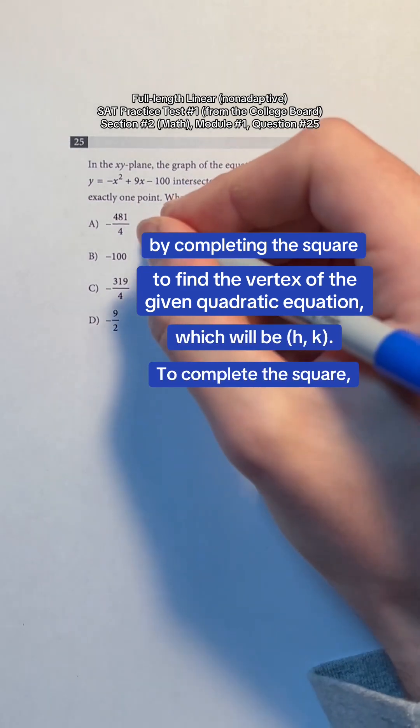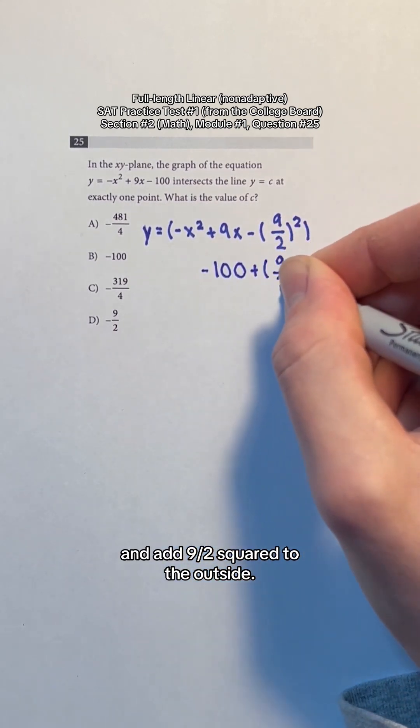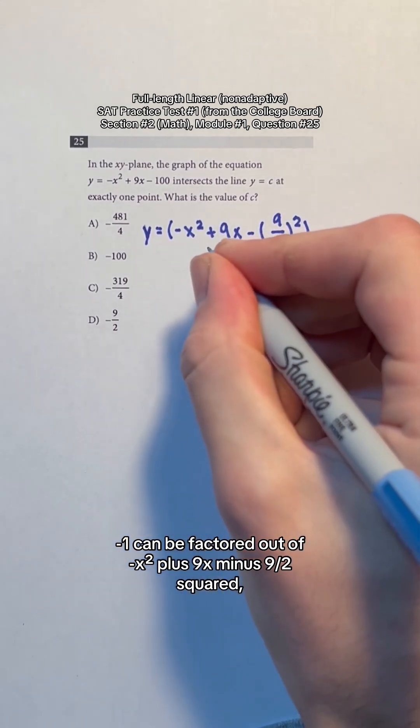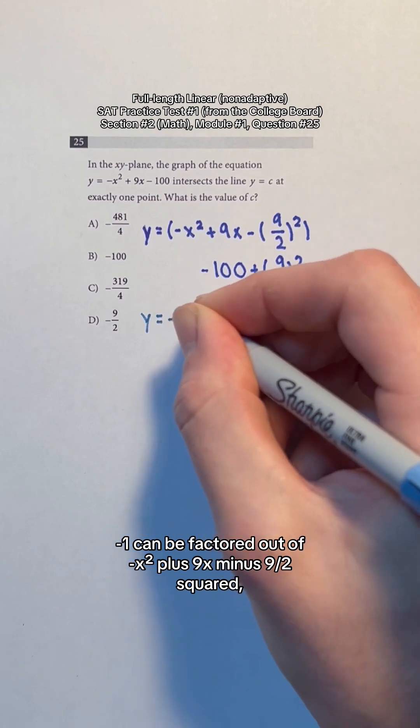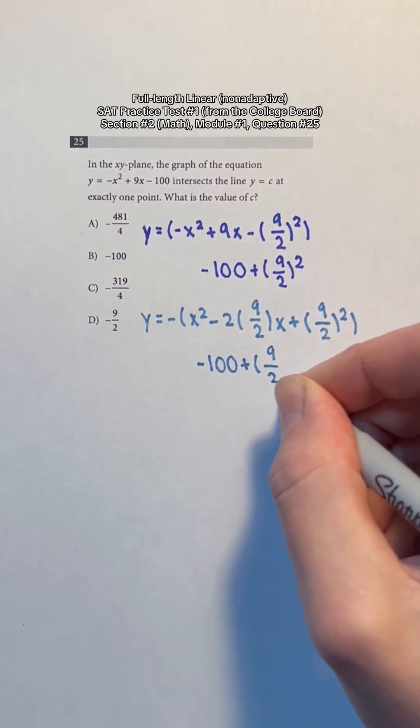To complete the square, we can subtract 9 halves squared from negative x squared plus 9x and add 9 halves squared to the outside. Negative 1 can be factored out of negative x squared plus 9x minus 9 halves squared, and 9 can be rewritten as 2 times 9 halves.